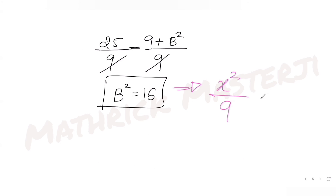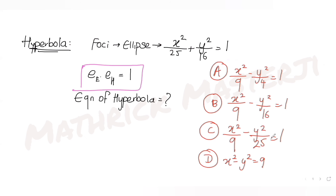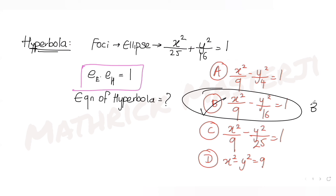Substituting a² = 9 and b² = 16 into the hyperbola equation gives x²/9 − y²/16 = 1. This matches option B, so B is the correct answer.